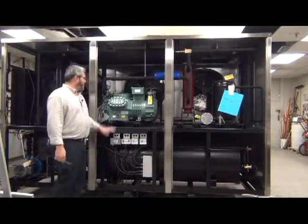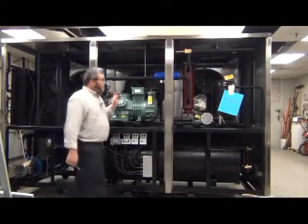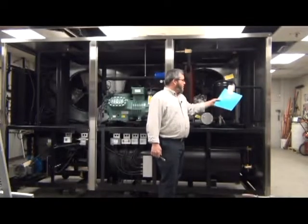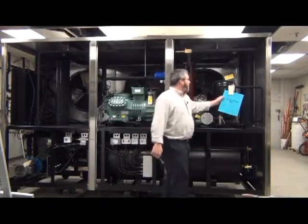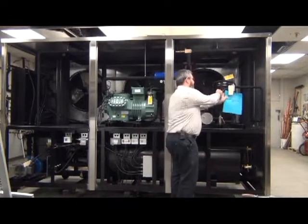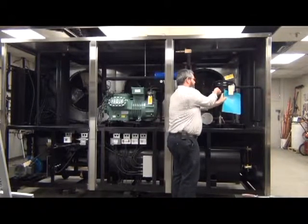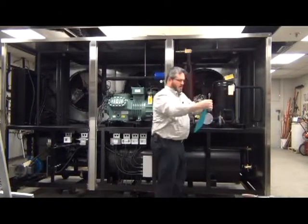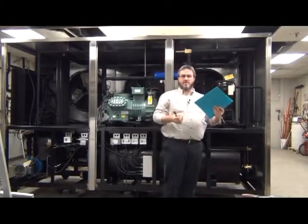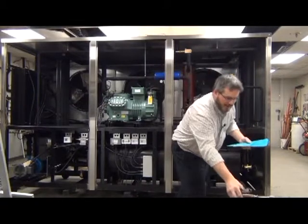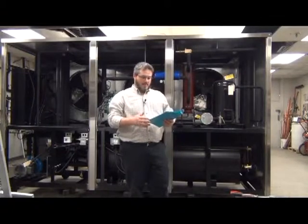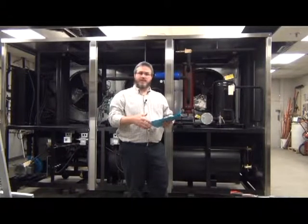Once you have all the panels that you need to remove from the chiller removed, you can go ahead and locate your manual, which will be in a folder that looks like this. It will be secured to the piping with a wire tie, which you can clip off with your diagonal cutters. This manual will contain all the information that you need, all the technical specifications, and all the information that you need for the startup, as well as a set of prints and electrical diagrams.